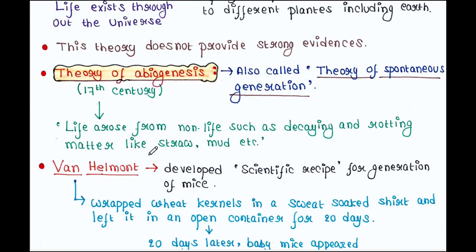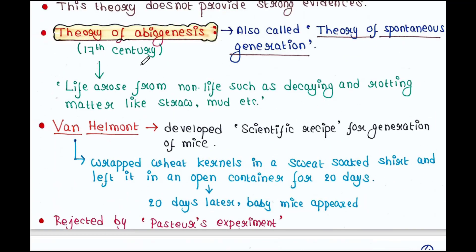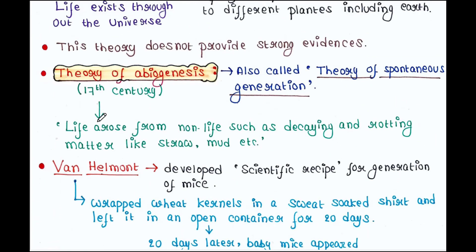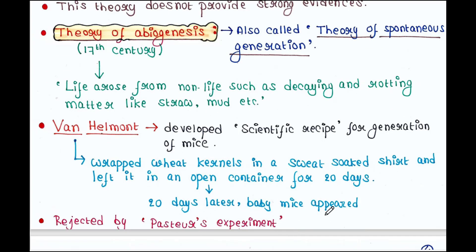Next is theory of abiogenesis. This theory was also called theory of spontaneous generation. In 17th century, this theory suggested that life arose from non-life such as decaying and rotting matter like straw, mud, etc. Van Helmont developed the scientific recipe for generation of mice. He wrapped wheat kernels in a sweat-soaked shirt and left it in an open container for 20 days. 20 days later, baby mice appeared.